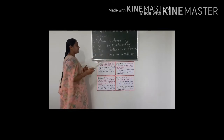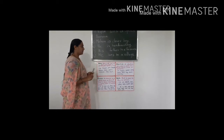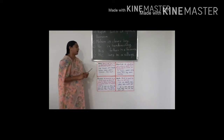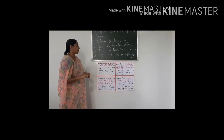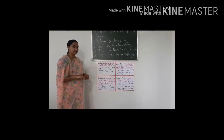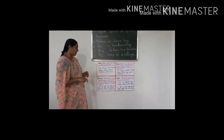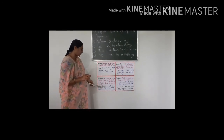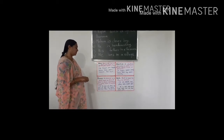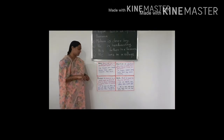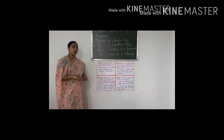So: Mohan is a clever boy. He is hardworking. His father is a farmer. He lives in a village. In this way, we can avoid repetition of a noun by using pronouns in a sentence. To avoid this repetition, we use pronouns: I, you, we, they, he, she, it, me, us, them, her, this, those. In this way, a pronoun is a word used in place of a noun.